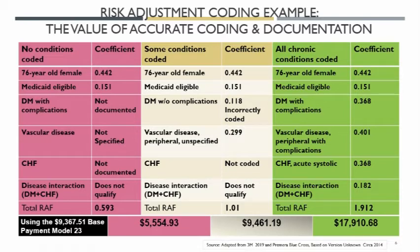On the pink side, we have a 76-year-old female — remember, that has a relative factor, that won't change. She's Medicaid eligible, so we have a factor for that and that's not going to change. We have diabetes with complications — it wasn't documented, so we can't code it. Vascular disease wasn't specified, so we end up with an unspecified code. CHF was not documented, so we aren't going to code that either. We can't have a disease interaction because so many things weren't documented. We ended up with a RAF of 0.593, and on an annual PMPM basis we would have gotten $5,554 for this patient. Divide by 12 and that tells you the payment per month.